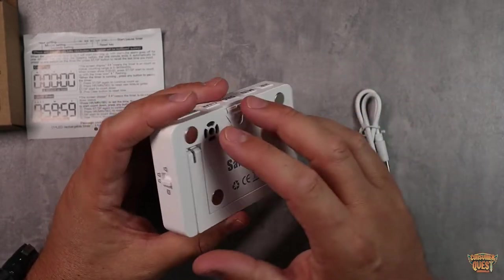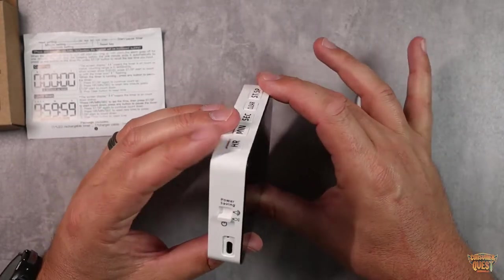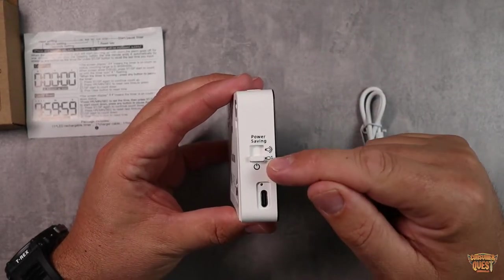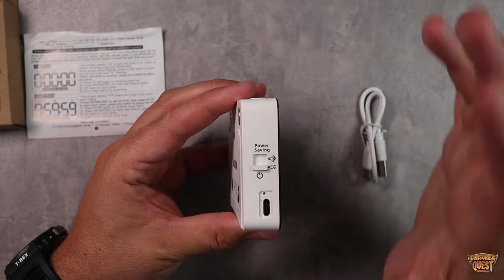You got your speaker right here, which is for the timer alarm. And that's basically it. You've got your USB-C charging port right here. You've got your on and off button here, as well as your brightness setting.